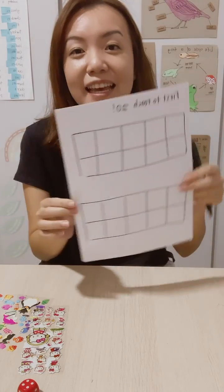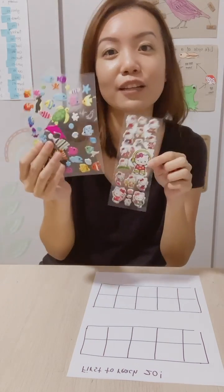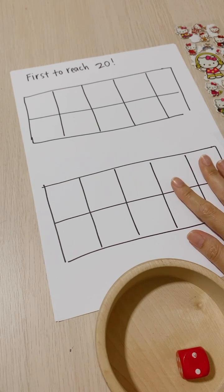Like this. And this is how you play the game. So with the dice, you will take turns to roll it with your child. Each of you will get a set of stickers. Before you begin, you want to count